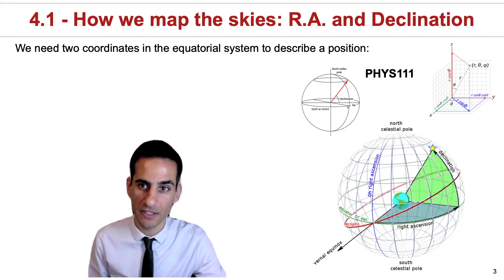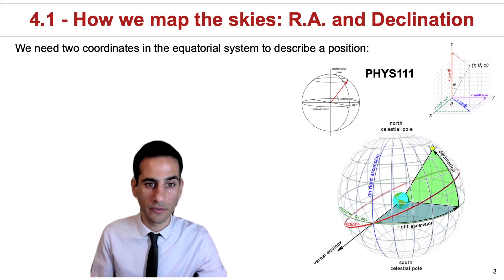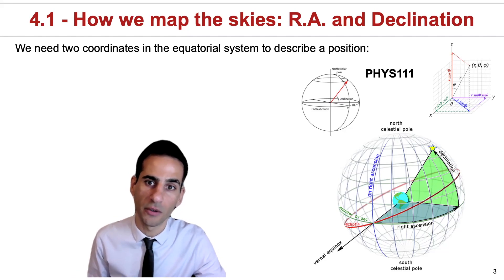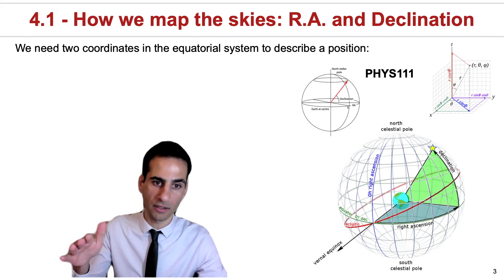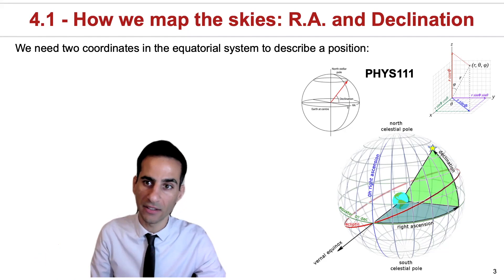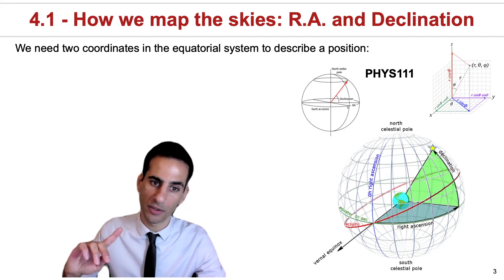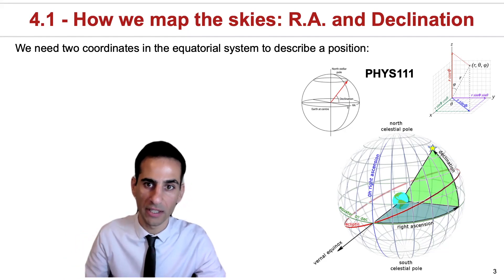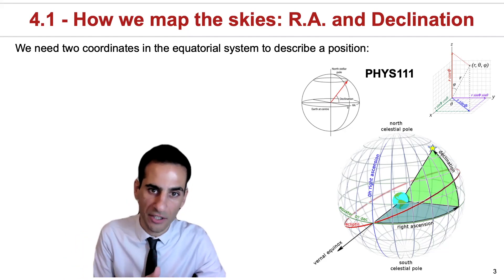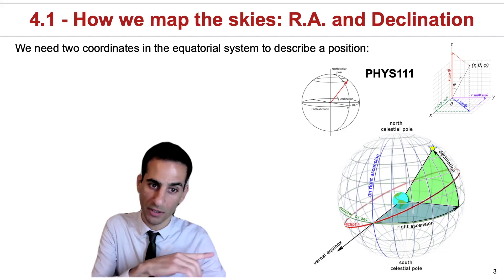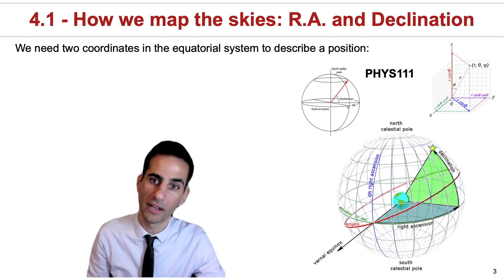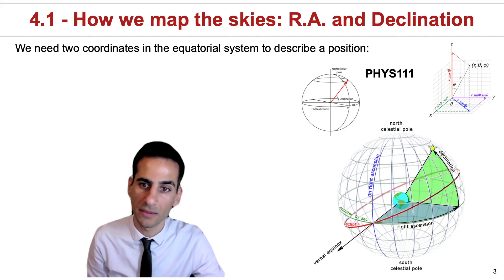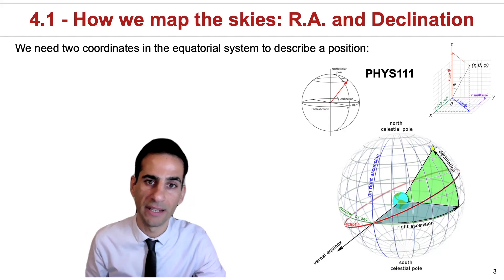If you remember things from Physics 111 or even 115, where you covered spherical coordinates, there will be an angle that measures the position equivalent to the xy-axis, and then an angle that will essentially go north and south. In astronomy, the east-west angle is called right ascension, which goes essentially on the xy coordinate system, and the north-south angle is called declination.